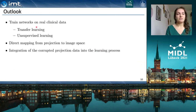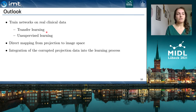Still, some points need to be considered. First, the network should be trained on real clinical data — we should mention transfer learning and unsupervised learning. Transfer learning means training our network first on a large number of simulated data and then refining the network parameters with a smaller number of real clinical data. For real clinical data, ground truth images are often not available, so unsupervised learning should be tested to see if it can be applied to our network.